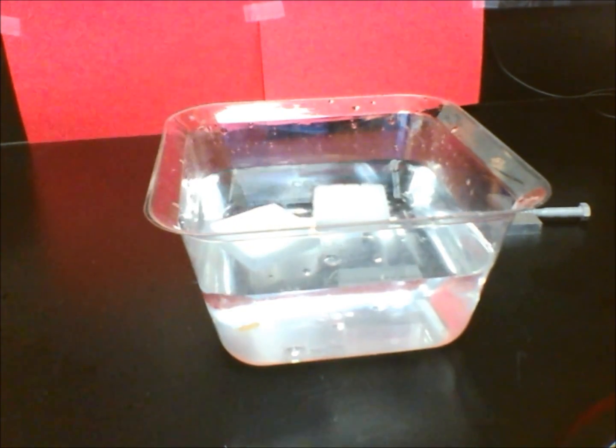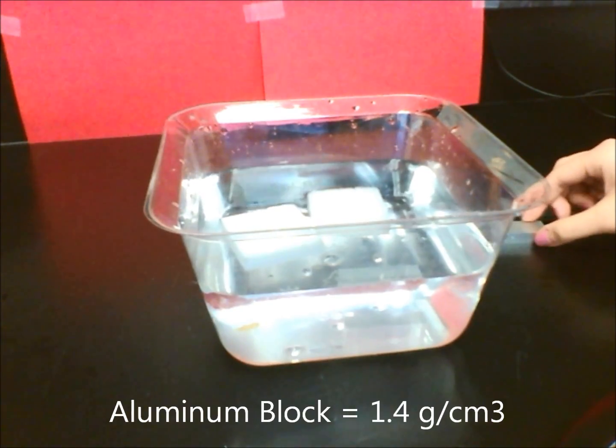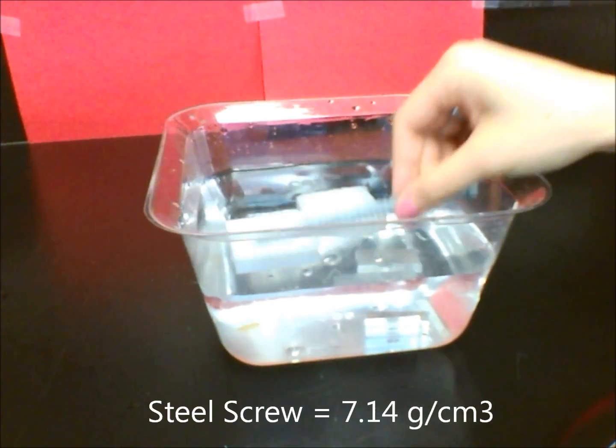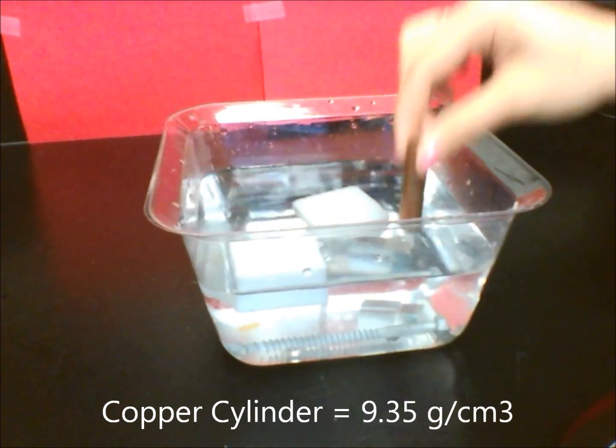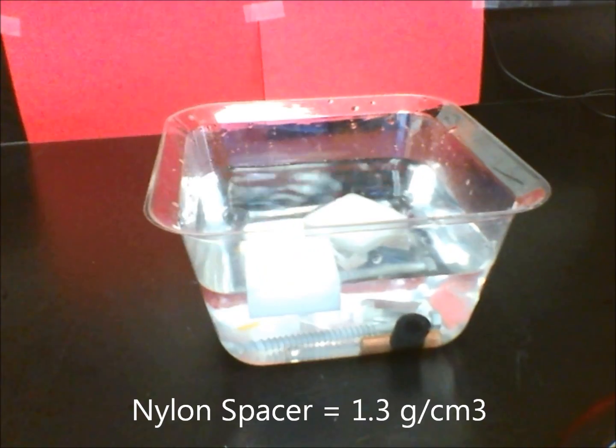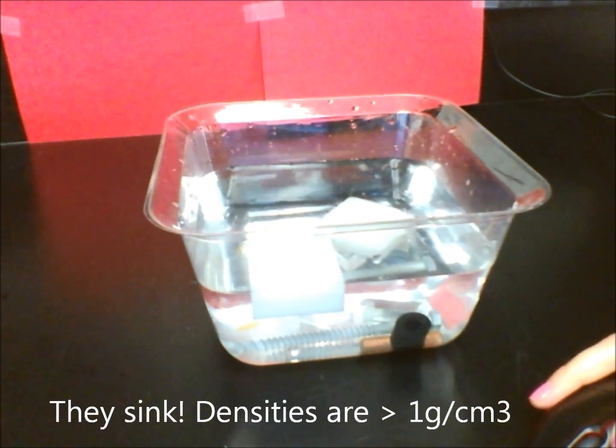Let's look at the rest of our objects and observe what happens. Aluminum block, steel screw, copper cylinder, and nylon spacer. They all sink in water because their densities are greater than 1 gram per cubic centimeter.